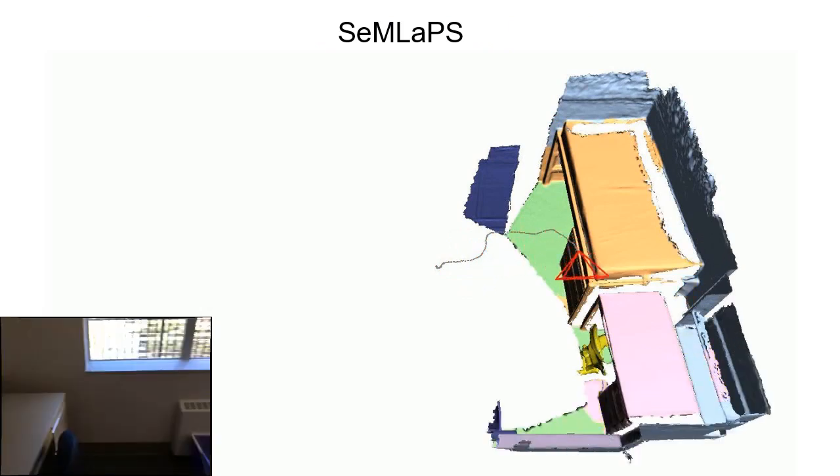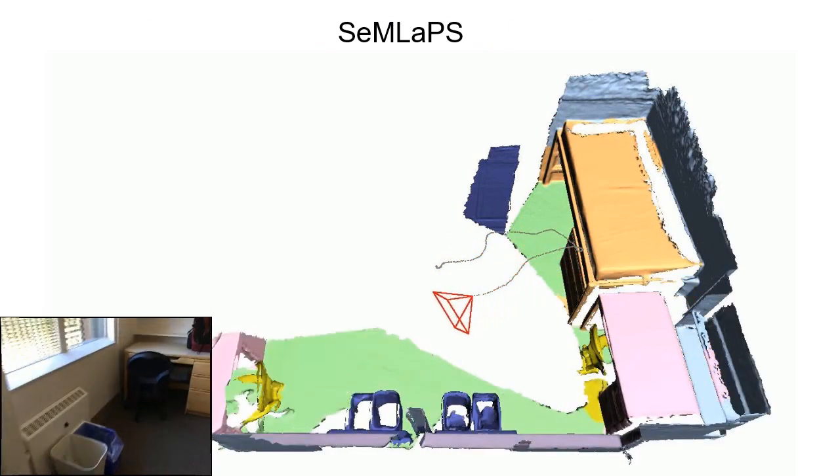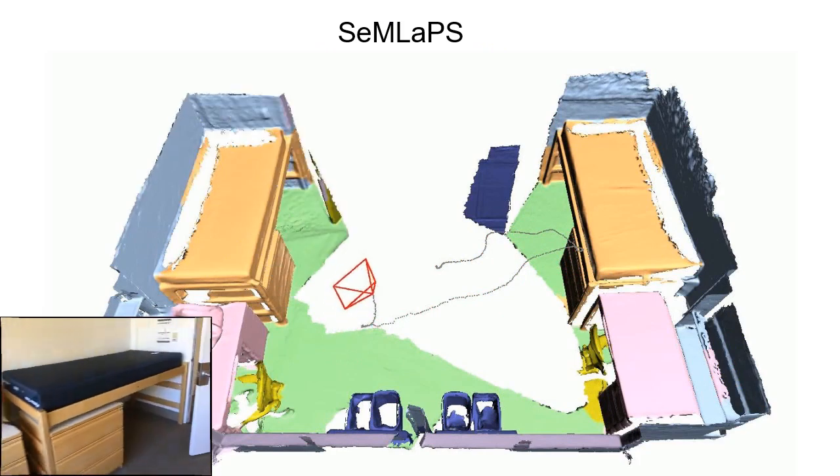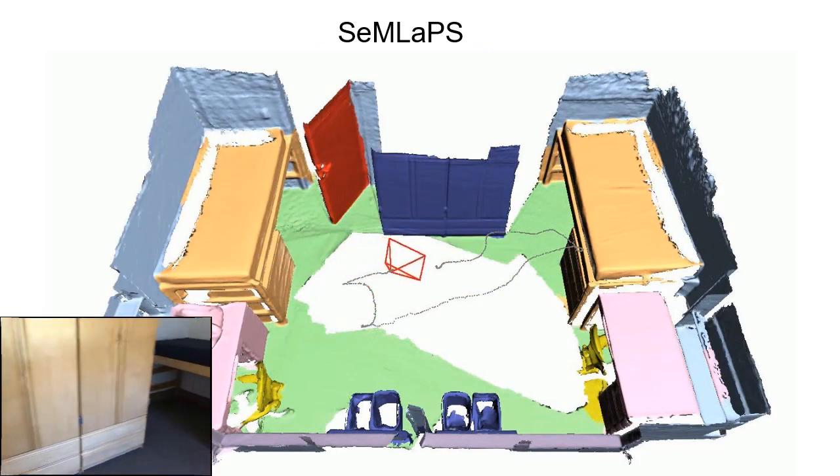Semlapse is a real-time semantic mapping system based on 2D-3D networks. It takes in a sequence of RGBD images to output the semantic mapping of the scene sequentially.